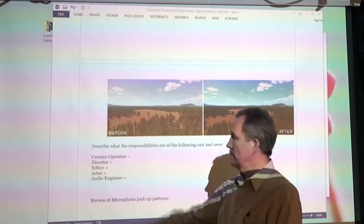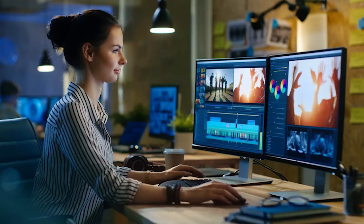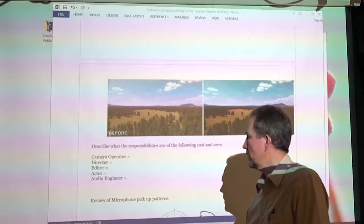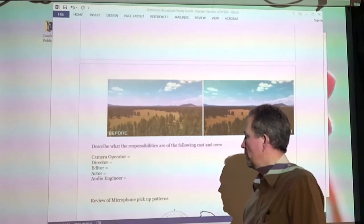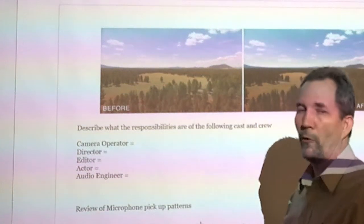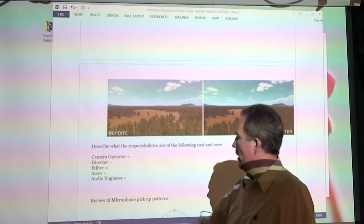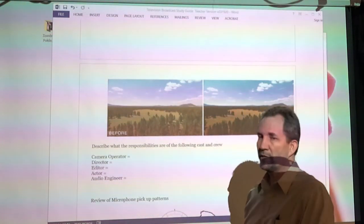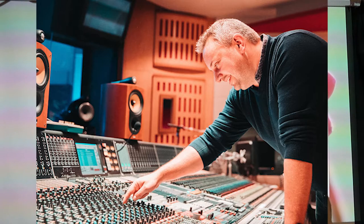The editor. They're in post-production, right? They're the ones that take all the shots. They edit them together. They assemble them into sequences that make sense. And they probably do some other post-production work on those shots, typically. The actor, of course, performs in front of the camera. They're telling the story to the audience. And the audio engineer, of course, in control of the sound. Making sure that the sound is loud enough and that there's not any unwanted noise.